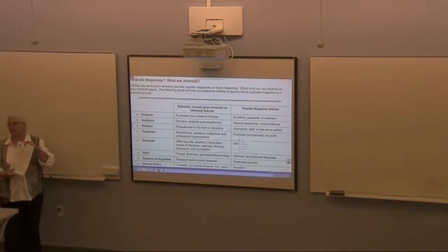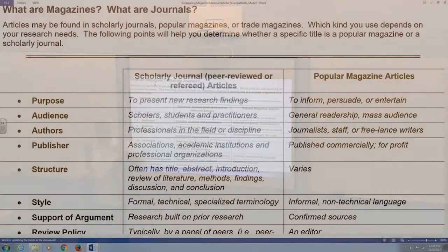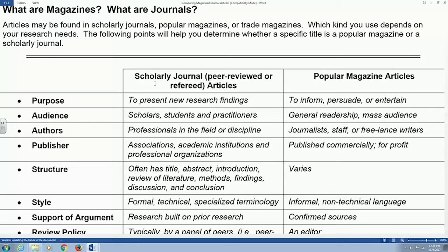What's in parentheses next to 'scholarly journal' in that first column? Peer-reviewed — good. Peer-reviewed or refereed. We're suggesting you use materials that have been reviewed by experts in the field before publication. Scholarly journals go through this whole review process. I've been told it can take up to a year to get your article published in a scholarly journal because it goes through such a thorough review process. That's the kind of information you want to try to use when doing research and writing papers.